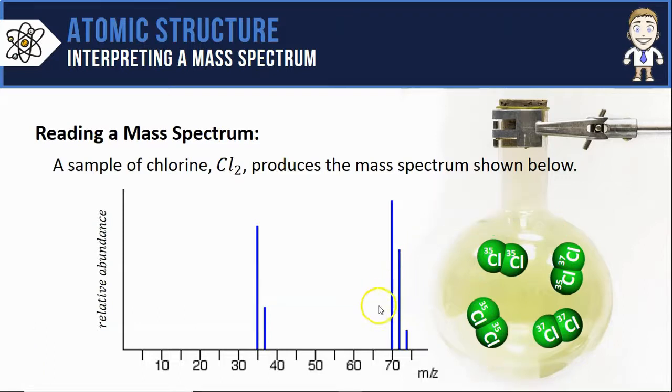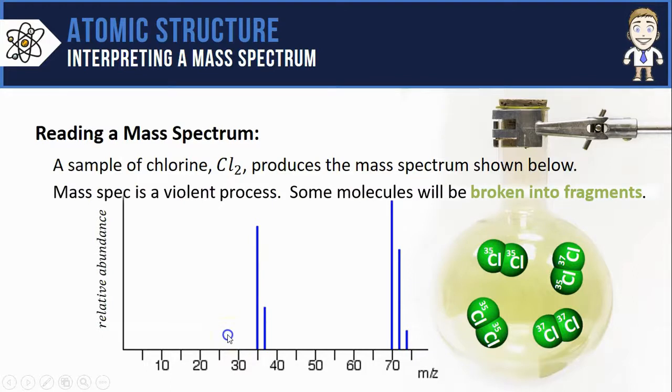So that explains these three more massive peaks, but we also see two smaller peaks down here somewhere between a mass of 30 and 40. To understand those, you've got to also know that mass spectroscopy is a very violent process. Even though we're primarily testing Cl2 molecules, as they collide with each other and with the inside walls of the spectrometer itself, some of them are going to actually be broken apart into pieces or fragments.